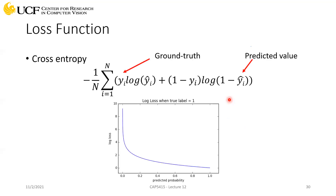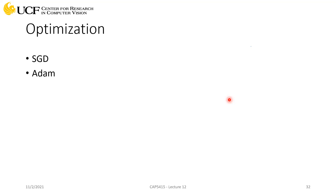Once you have the loss function, you train using gradient descent. Different variations exist: SGD (stochastic gradient descent), Adam optimizer which uses adaptive momentum and is widely used, and Adadelta which automatically finds a good learning rate without you specifying it. It's ongoing research — for some datasets one optimizer performs better than others. Adam is most widely used; SGD is used for huge datasets when longer convergence time is acceptable.